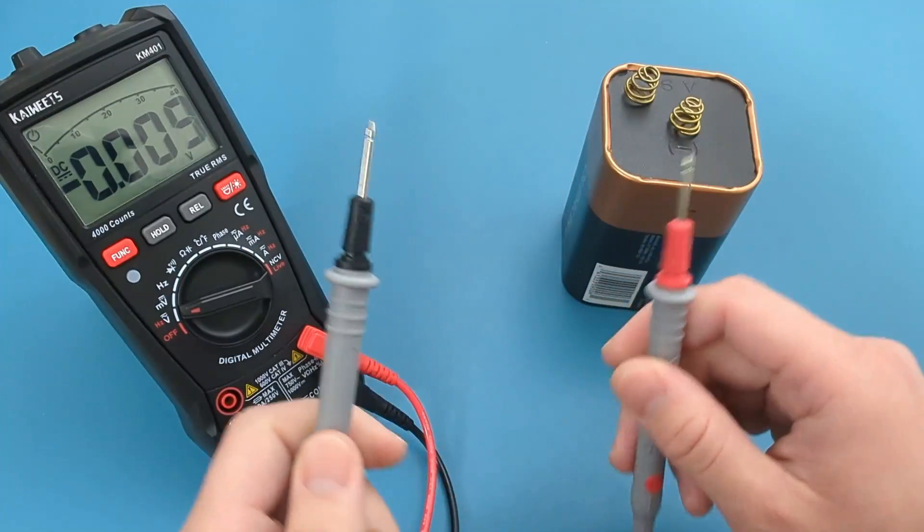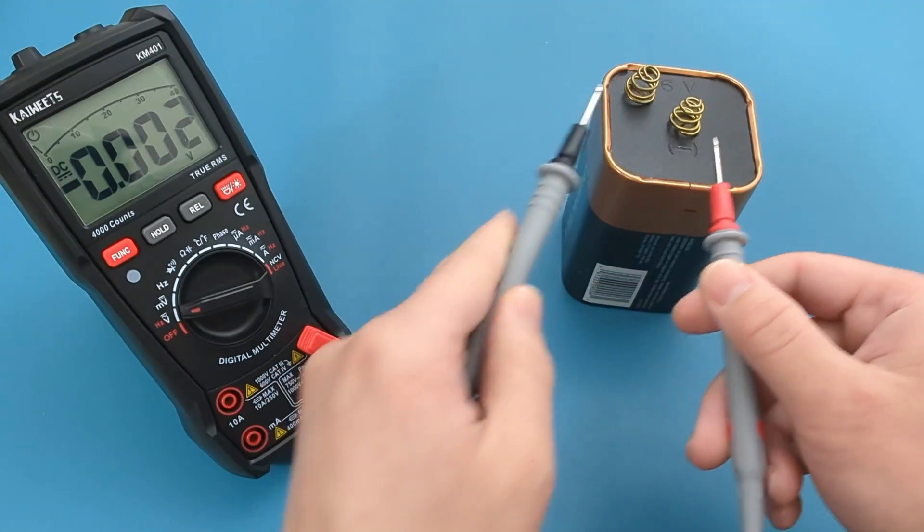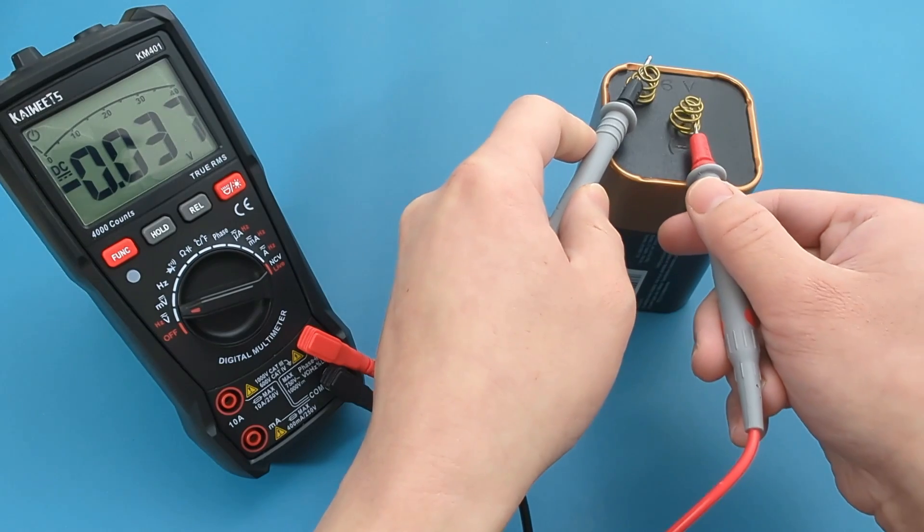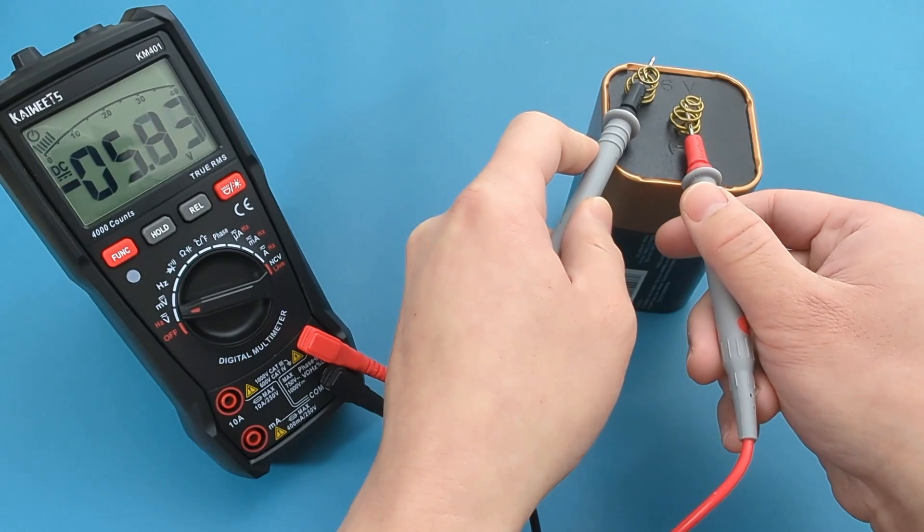If you switch the probe leads and touch the battery's terminals again, the multimeter will display the same number, but with a negative sign.